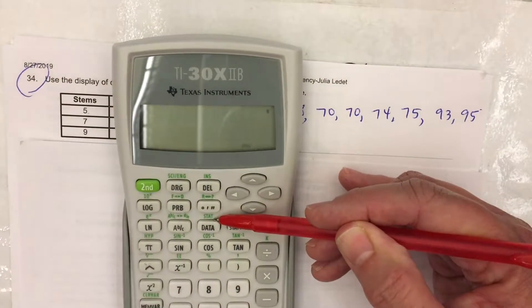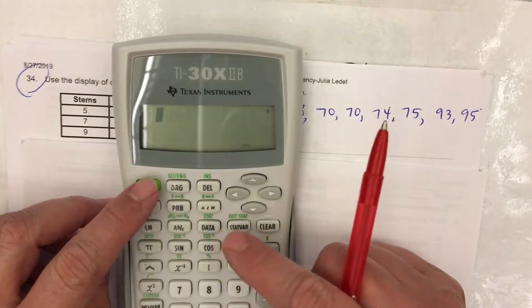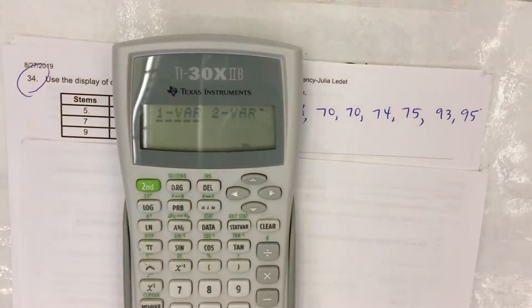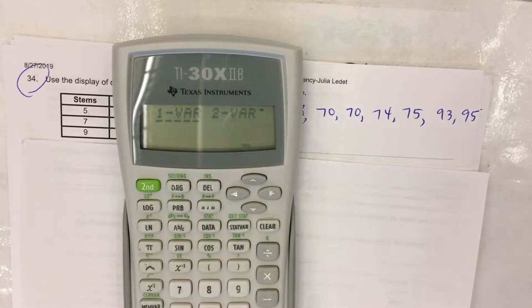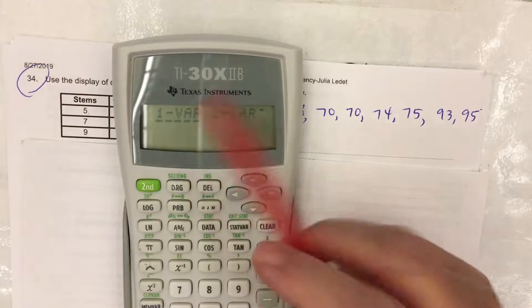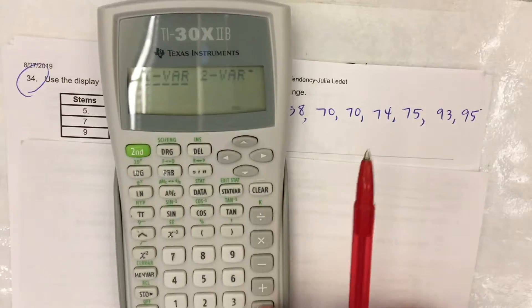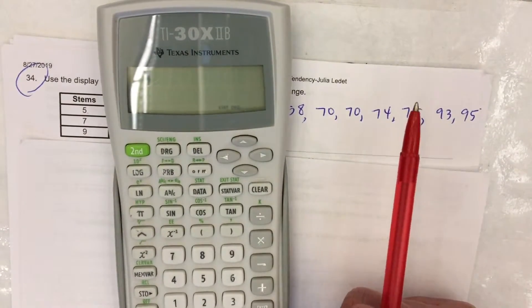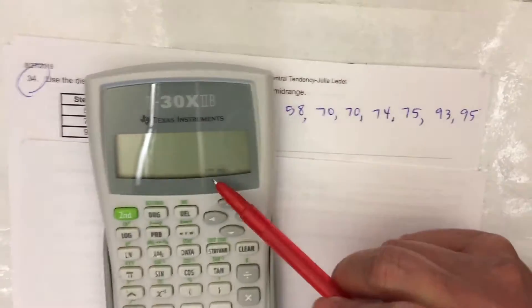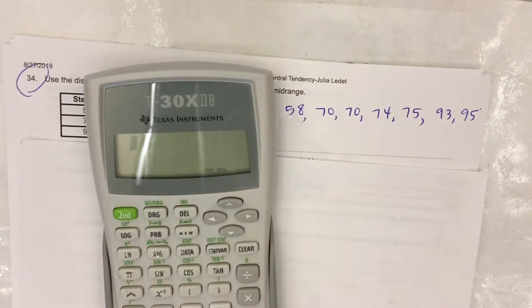I'll press second stat. Now it is showing at the top there in the display, one variable statistics or two variable statistics. In this class, we're doing one variable statistics. That's underlined, press equals to select one variable statistics. And then you see on the display STAT. It is now in statistics mode.